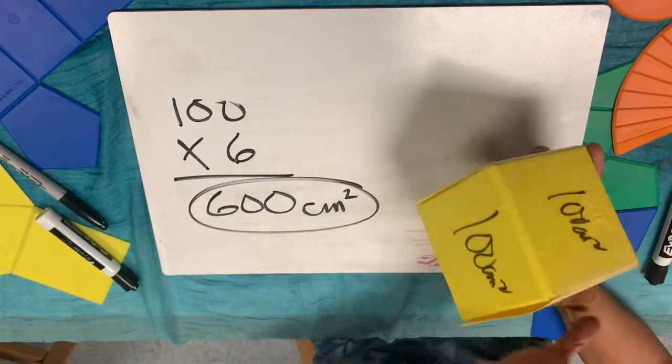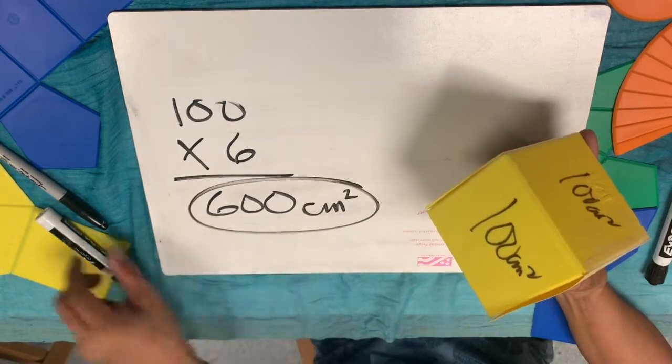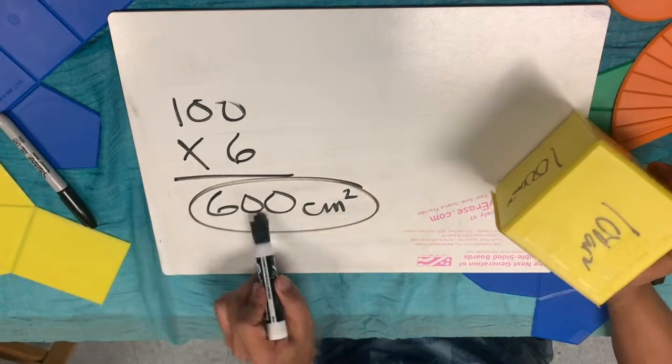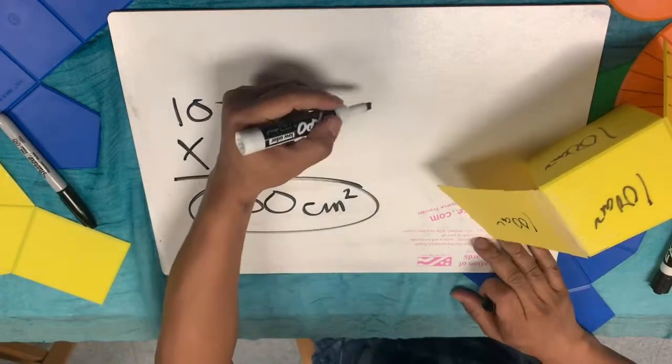To cover the whole cube, we need 600 square centimeters — meaning we need 600 of those one-square-centimeter units to cover this cube entirely.